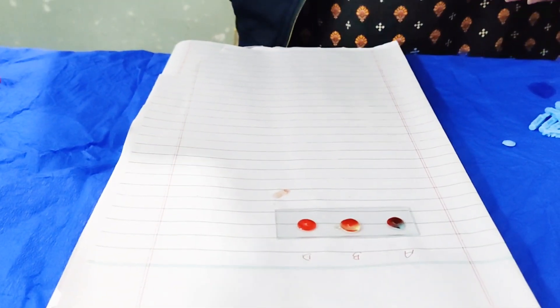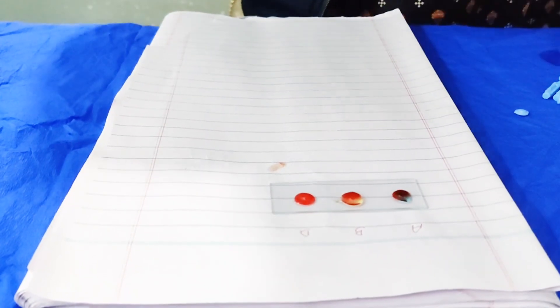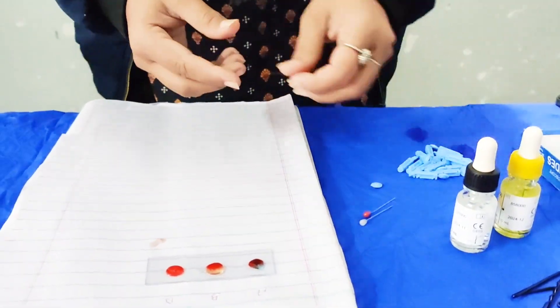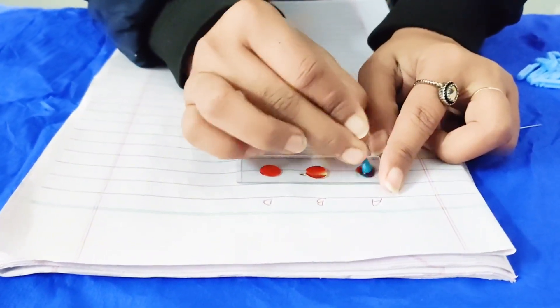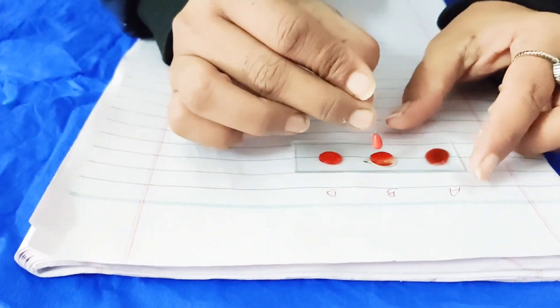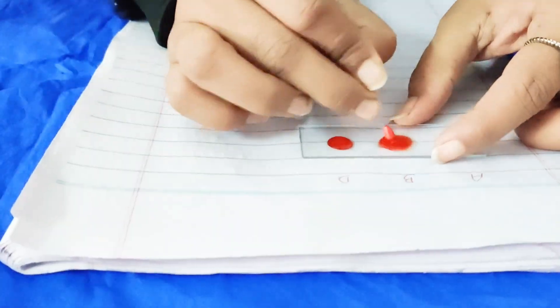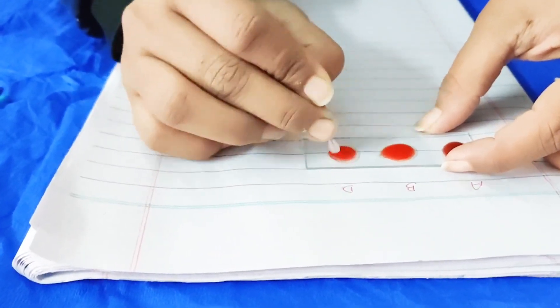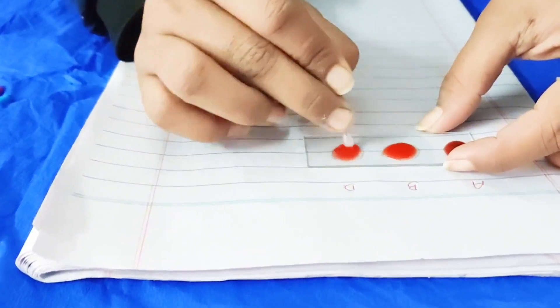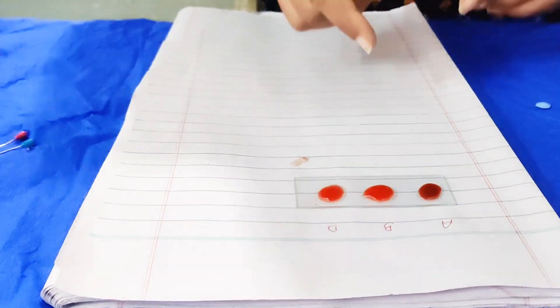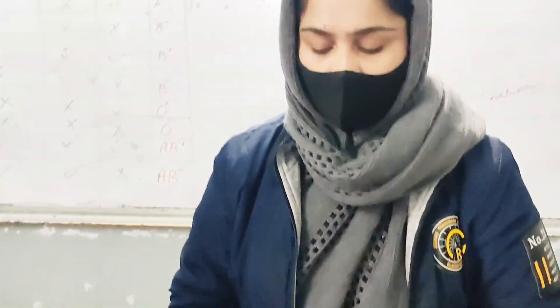We can blend using anything, but because the proper tool is not available, I will use a pin for blending. We will not blend with a pen because then we will not know the correct blood group. We will blend each drop properly with its respective anti-sera, so we will know the blood group.